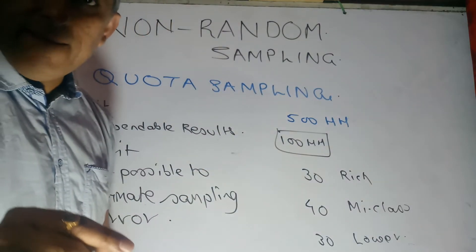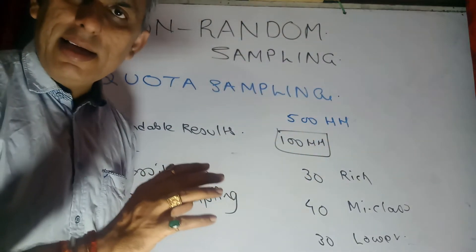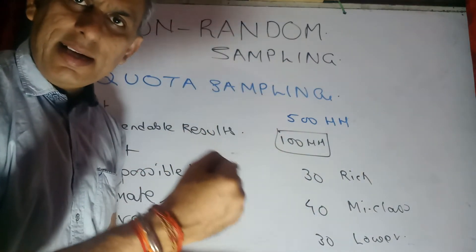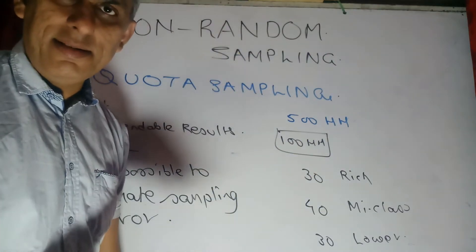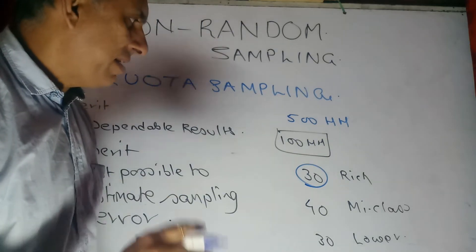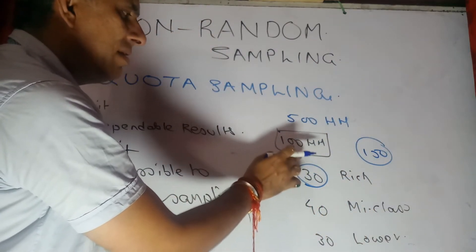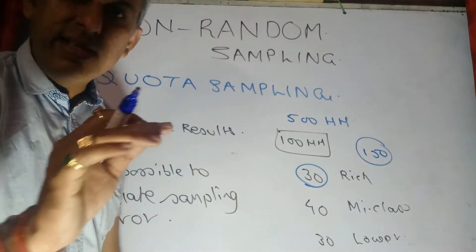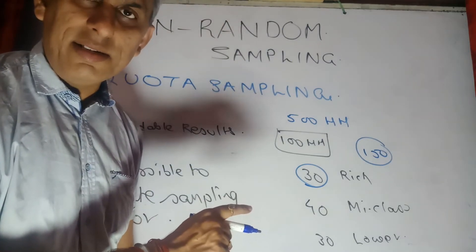Now, in stratified sampling, whatever 30 rich households are to be taken, all 30 are picked randomly — it is restricted to start with, but then becomes random in picking the 30 rich households. In quota sampling, however, even those 30 rich households — out of the overall 150 rich households in the city — are picked based on the understanding and acumen of the investigator or enumerator, not randomly.